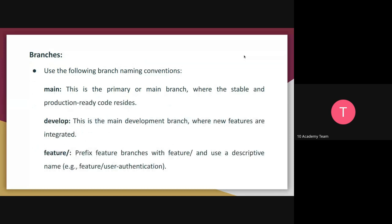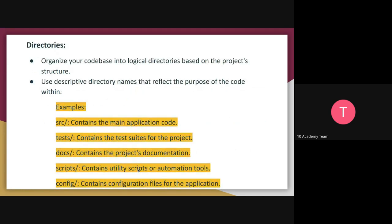When it comes to branches, when you are working in a team in the future, how you name your branch is also something you should consider. There is the main branch, which everyone understands. Then there's the develop branch indicating the development branch. For features, name them descriptively — for example, a branch for user authentication should reflect that feature name, making it more descriptive and easier to manage in a collaborative environment.